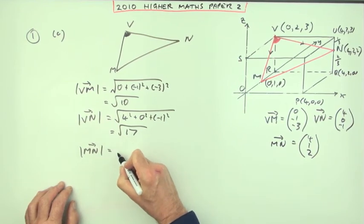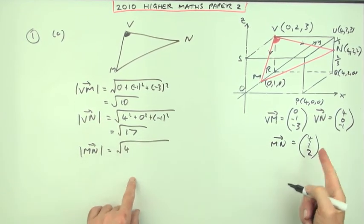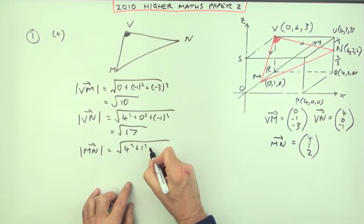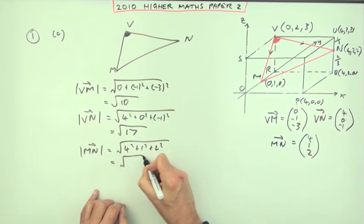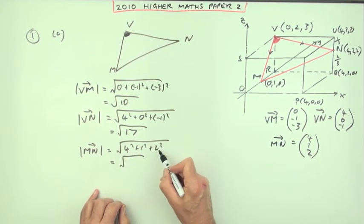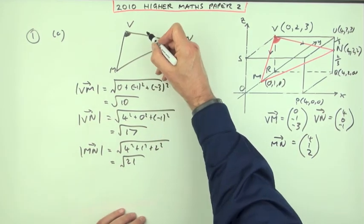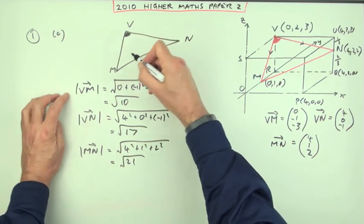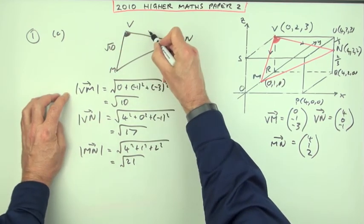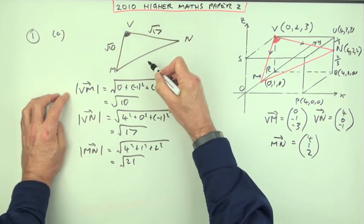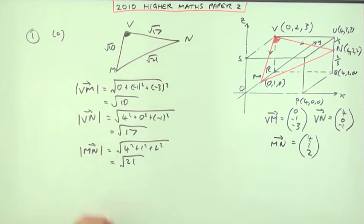And the length of MN is the square root of, 4 squared, 1 squared and 2 squared. So that's the square root of 16 and 4 and 1 is 21. So I've got the lengths of the three sides here. I've got VM is root 10, VN is root 17, and MN is root 21.